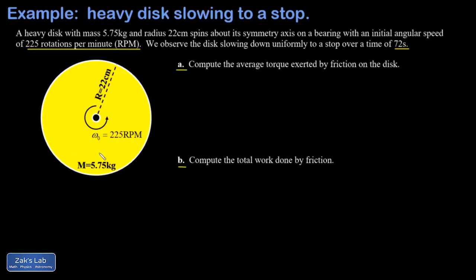The first order of business here is to get that initial velocity converted into SI units. We have 225 rotations per minute, multiply by 2π radians per rotation, which cancels the units of rotations. Then convert minutes to seconds: one minute for every 60 seconds. The minutes cancel and we're left with radians per second. When I do this calculation, I get 23.56 radians per second.